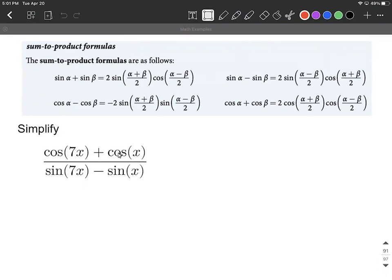You'll notice in our numerator we have a cosine plus another cosine, so I'm going to use the sum of cosines formula. For our denominator, we have a sine minus a sine. That's pointing us towards sine alpha minus sine beta, so I'm going to utilize that formula for that part.